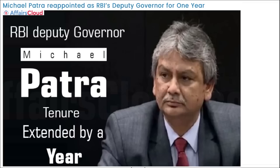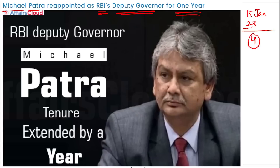Michael Patra has been reappointed as the RBI's Deputy Governor for one year. The Appointments Committee of the Cabinet (ACC), headed by Prime Minister Narendra Modi, approved the reappointment of Michael Patra as Deputy Governor of the Reserve Bank of India for a further period of one year. His new term will start from 15th January 2023. There are four Deputy Governors in the RBI. The Governor of RBI is Shaktikanta Das.